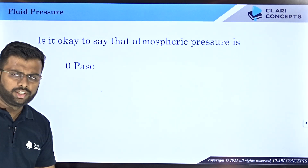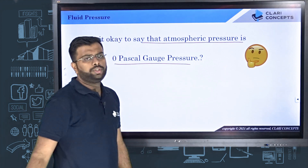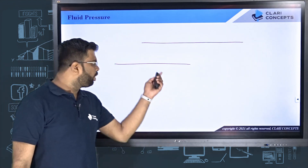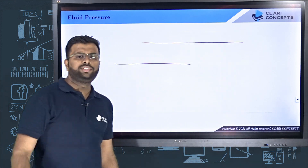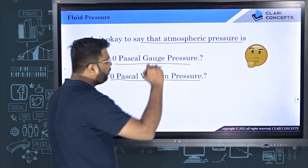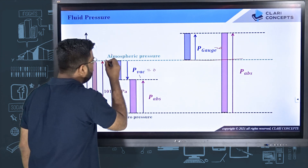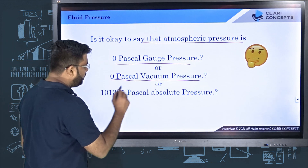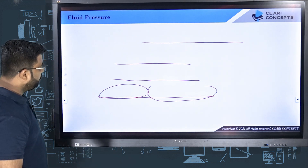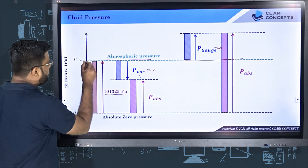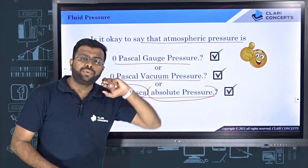Now let me conclude with one question: Is it okay to say that atmospheric pressure is 0 Pascal gauge? Answer is yes — if gauge equals 0, the line comes down to the atmospheric line. Is it okay to say atmospheric pressure is 0 Pascal vacuum? Zero Pascal vacuum means vacuum is 0, so that line again comes back to the atmospheric line — yes. And finally, is it okay to say atmospheric pressure is 101325 Pascal absolute? Since you measure from absolute zero line, you end up at the atmospheric line again — yes. So all three answers are yes.